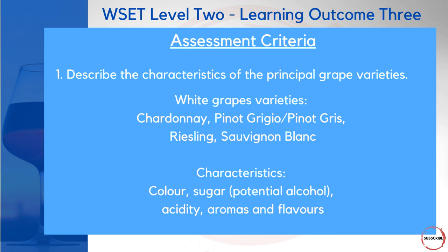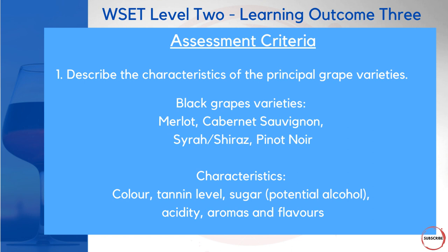Assessment criteria number one is about describing the characteristics of the principal grape varieties. You need to be able to talk about colors, acidities, aromas, flavors, and sugars leading to potential alcohol for each variety. For black grapes, you also need to be able to discuss the tannin level in the wine — whether it's medium, high, or low. These are the types of things you need to be thinking about under this assessment criteria.